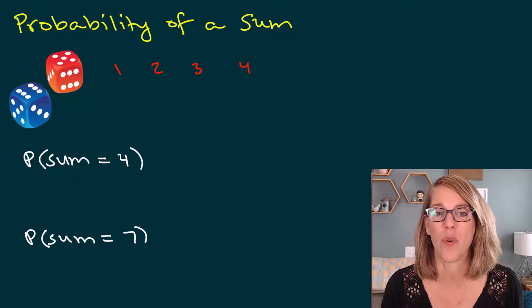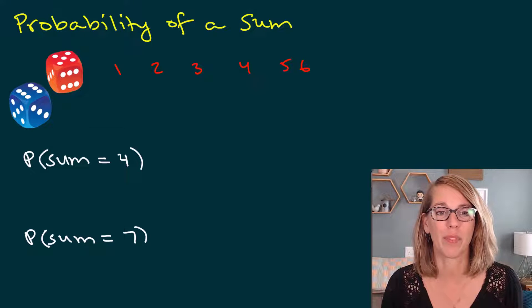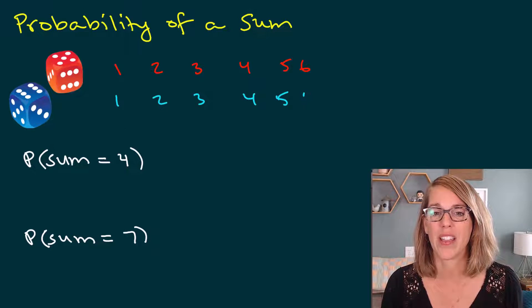So one, two, three, four, five, six. Same is true for that blue dice. One, two, three, four, five, or six.